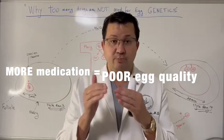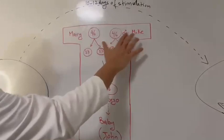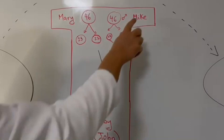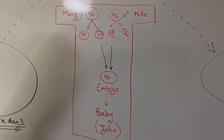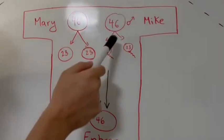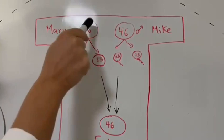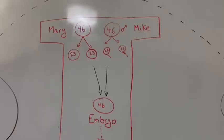Imagine Mary and Mike. They want to have a baby, John. Mary is 46 chromosomes, Mike is 46 chromosomes, and we're going to produce an embryo or baby that's normal 46 chromosomes. So the egg has to split in half, 23 and 23. The sperm has to split in half, 23 and 23. Now a lot of mistakes happen here. So instead of cutting into 23 and 23, it could be 24 and 22.